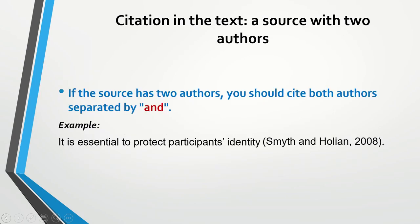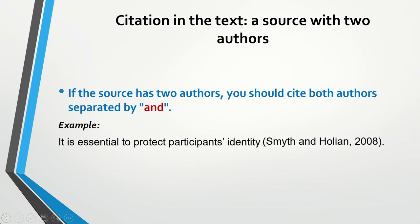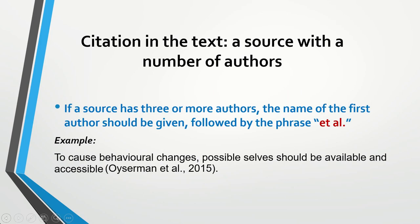Now let's talk about sources with two authors. If the source has two authors, you should cite both authors separated by AND. In this example I have Smith and Holian and the year of publication 2008. It is basically the same as citing sources with one author — the only difference is that you need AND between the authors' names. If a source has three or more authors, you should give only the name of the first author followed by the phrase 'et al.' — you don't need to give everybody's name.